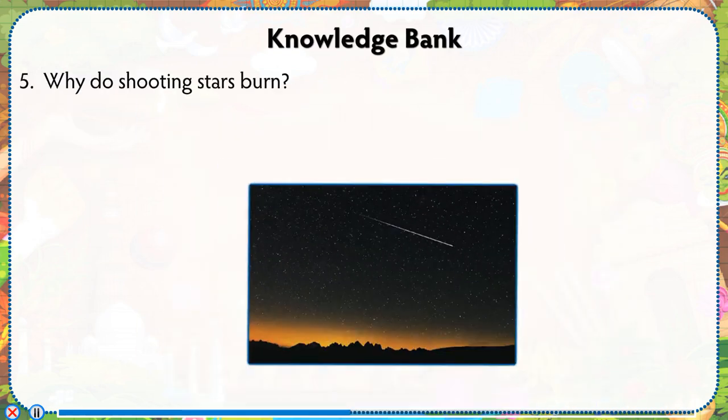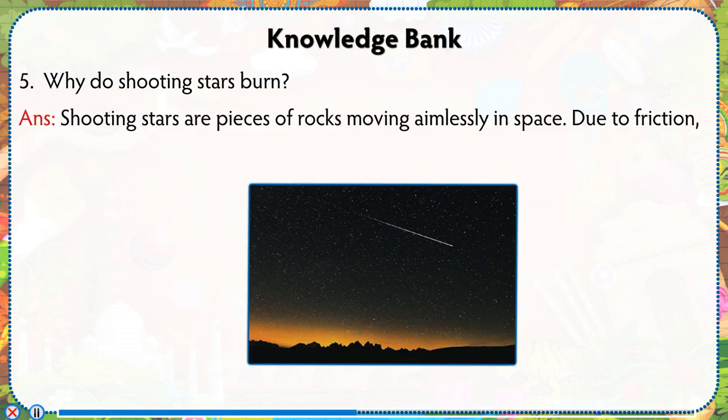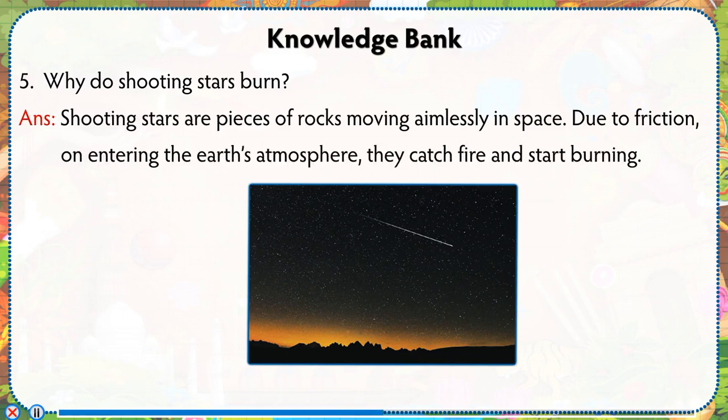Why do shooting stars burn? Shooting stars are pieces of rocks moving aimlessly in space. Due to friction on entering the earth's atmosphere, they catch fire and start burning.